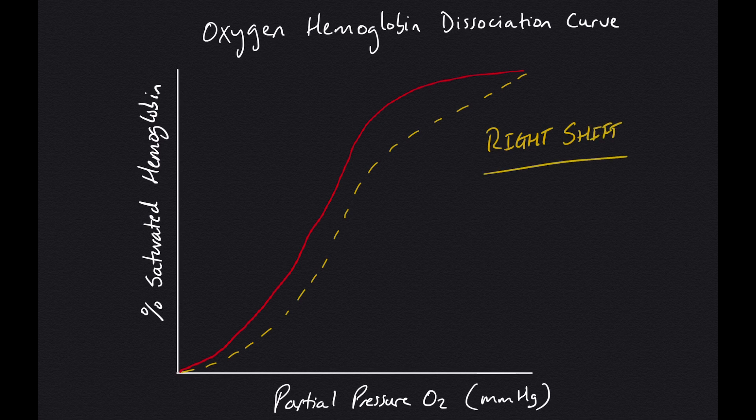With a rightward shift, we see a decrease in pH or an increase in the acidity of the blood, which also causes an increase in pCO2. With this, we also see an increase in temperature.